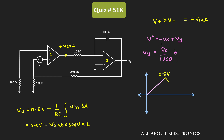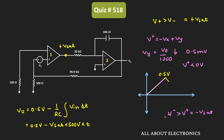As the output voltage Vout reduces, V+ will also start reducing. Once this Vy voltage goes below 0.5 millivolt, V+ will be less than 0 volt, and V- will be more than V+. As soon as Vy goes below 0.5 millivolt, V- becomes more than V+, and once again the output of the first comparator will become minus Vsat. From the output perspective, as the output voltage goes slightly below 0.5 volt, V- once again becomes more than V+, and the output of the first comparator becomes minus Vsat, causing the output voltage to start increasing again.